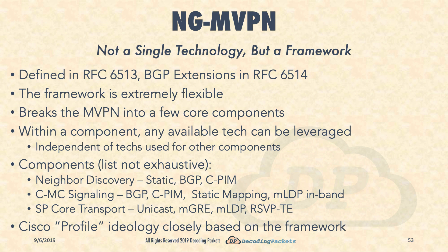BGP is clearly a major part of the next generation MVPN solution, but the authors define the framework to be much more than just a single BGP NLRI. The framework was ratified in RFC 6513, with the closely related RFC 6514 defining the BGP SAFI and the NLRI. The framework is meant to give greater flexibility to MVPN solutions by breaking the solution down into a few core components — clearly visible in the Cisco MVPN profile documents, where profiles are essentially supported combinations of these components.